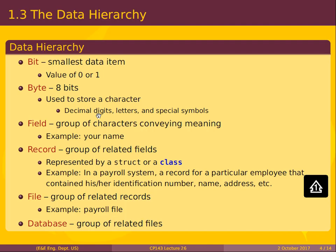In the data hierarchy, the smallest bit of information is called a bit, and it can have a value of zero or one. When we group bits in packets of eight, we call that a byte, and the byte is the smallest amount of memory needed to store something — for example, a character, a decimal digit, a letter, or any special symbol.